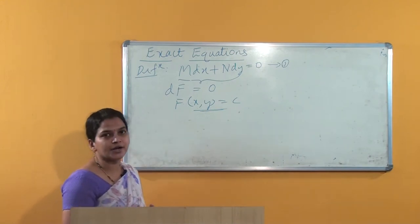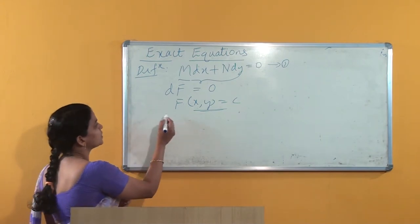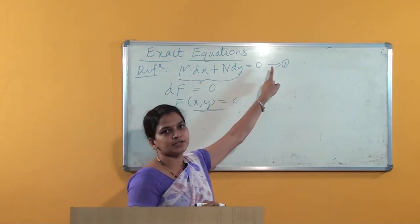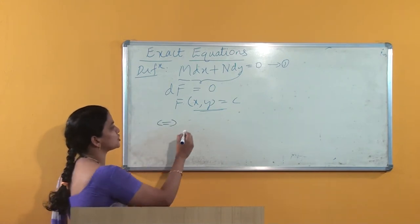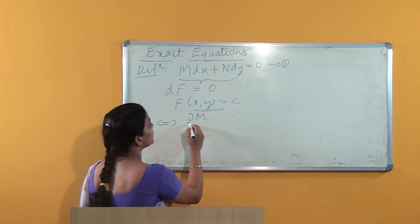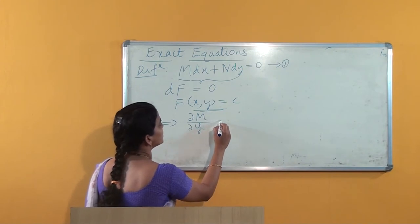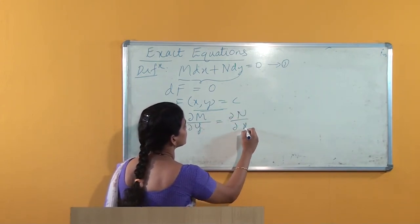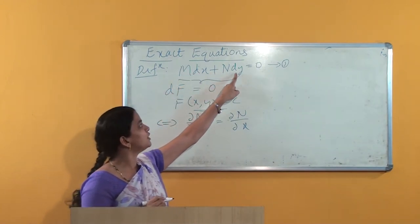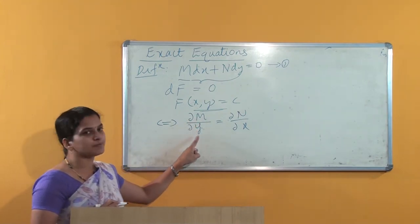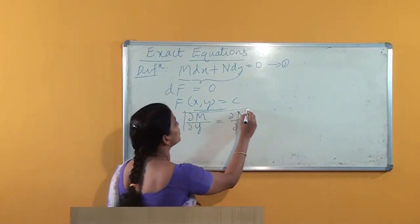Now let us look at the condition for exactness — how do we know if a given differential equation is an exact equation? The differential equation Mdx + Ndy = 0 is exact if and only if ∂M/∂y = ∂N/∂x. That is: identify M as the coefficient of dx and N as the coefficient of dy. The partial derivative of M with respect to y must equal the partial derivative of N with respect to x.